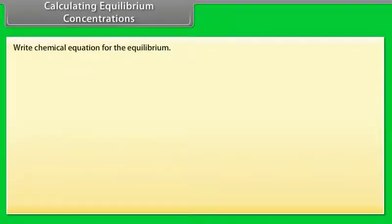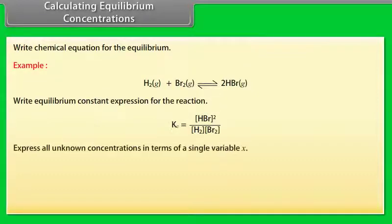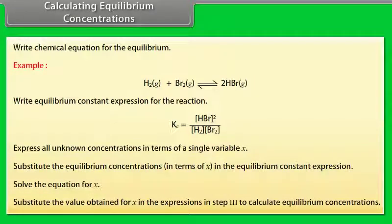Calculating Equilibrium Concentrations. Steps: (1) Write the chemical equation for the equilibrium. (2) Write the equilibrium constant expression for the reaction. (3) Express all unknown concentrations in terms of a single variable X. (4) Substitute the equilibrium concentrations in terms of X into the equilibrium constant expression. (5) Solve the equation for X. (6) Substitute the value of X into the expressions from step 3 to calculate equilibrium concentrations.